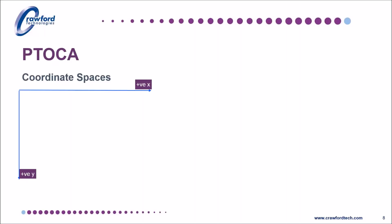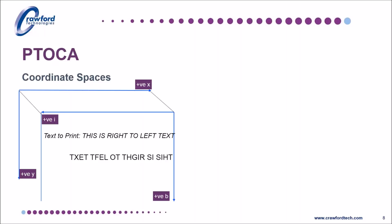However, not all languages are read left to right or from top to bottom, so the character is actually positioned against a certain set of axes used to describe the reading order. Here we have a right-to-left printing order given by the positive I direction. The text is positioned against these I and B axes and then mapped to the page axes for physical printing.